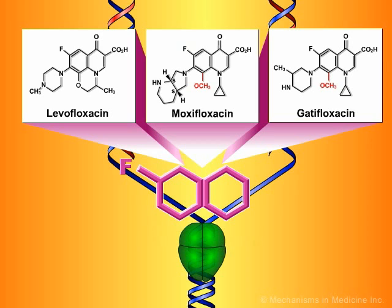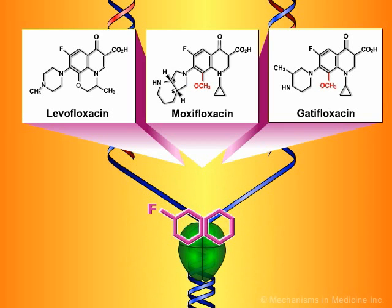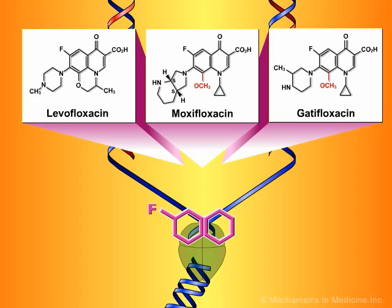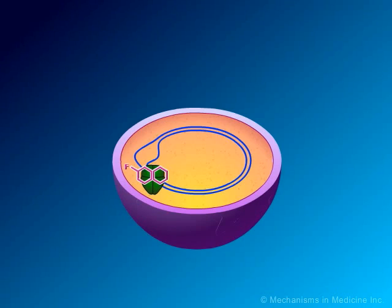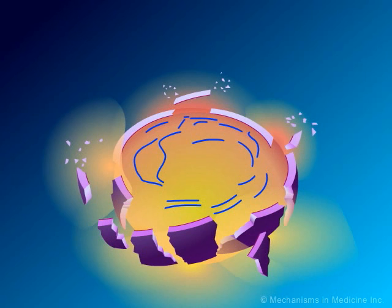Fluoroquinolones act by inhibiting the activity of both DNA gyrase and topoisomerase IV enzymes. For most gram-negative bacteria, DNA gyrase is the primary fluoroquinolone target. Fluoroquinolones have been shown to bind specifically to the complex of DNA gyrase and DNA, rather than to DNA gyrase alone. As a result of this binding, quinolones appear to stabilize the enzyme-DNA complexes, which in turn results in breaks in the DNA that are fatal to the bacterium.